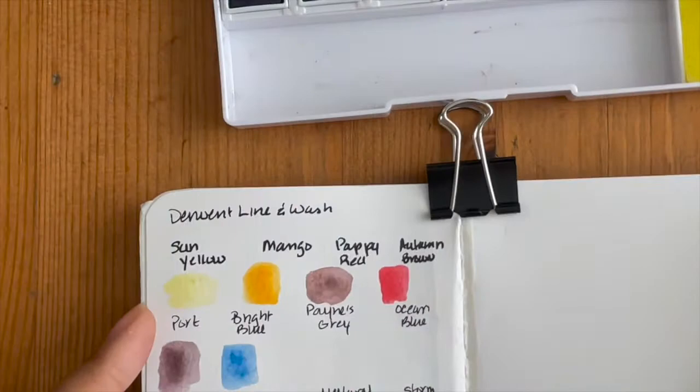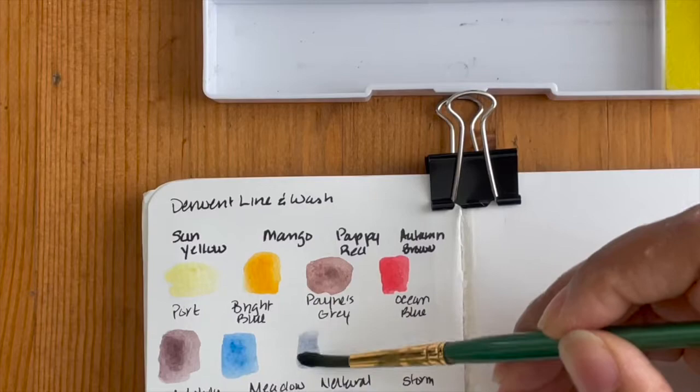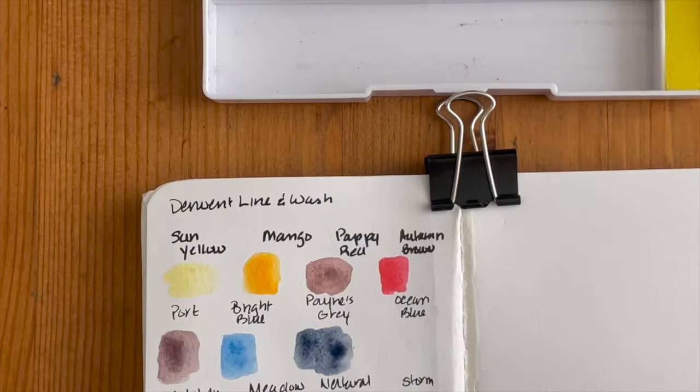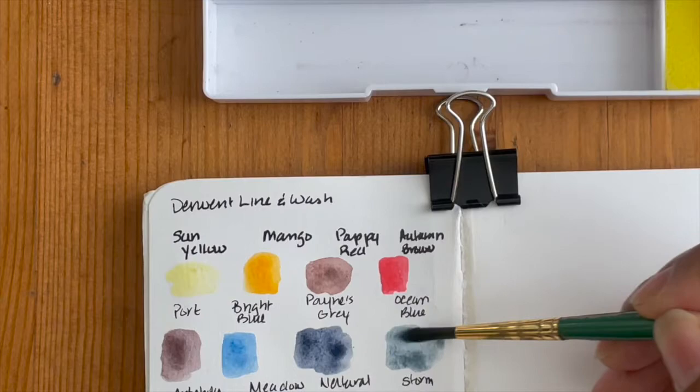I do think so far though, the port and the what is really autumn brown have graphite in them a little bit because they're kind of toned down. Then we're supposed to have Payne's gray here, which seems to be in alignment to what I'm expecting a Payne's gray to look like. We have ocean blue, which looks like it needs to be wet a little bit more, which is a nice toned down stormy kind of blue color.